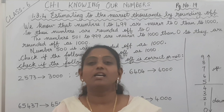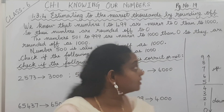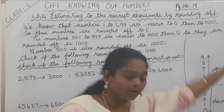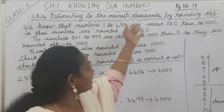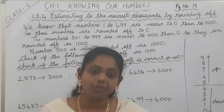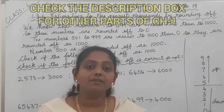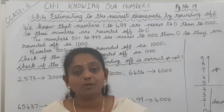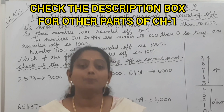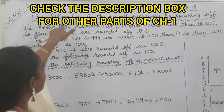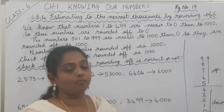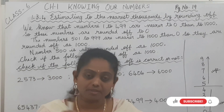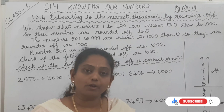Hello children, welcome to my maths class. Today we are going to continue Chapter 1 - Knowing Our Numbers. We are going to do estimating to the nearest thousands by rounding off. The previous videos covered rounding off to nearest hundreds and other parts of Chapter 1 - the links are in the description box. We will follow the same method with a few small changes.